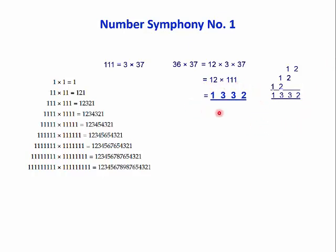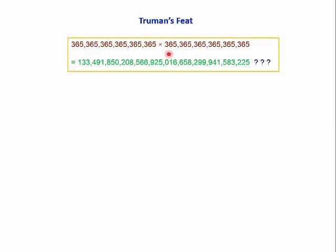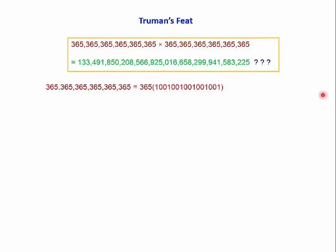This brings us back to Truman Henry Safford's problem. He had to multiply these two numbers, and this was the answer he gave — is it correct? We've got patterns here: the same number multiplied by itself, and 365 repeating six times. So we can make use of those facts. Let's take out a factor of 365. If you multiply it out, you'd get 365 six times, because there are six ones there. We want to square this number, so we'll need 365 squared times 111111 squared.